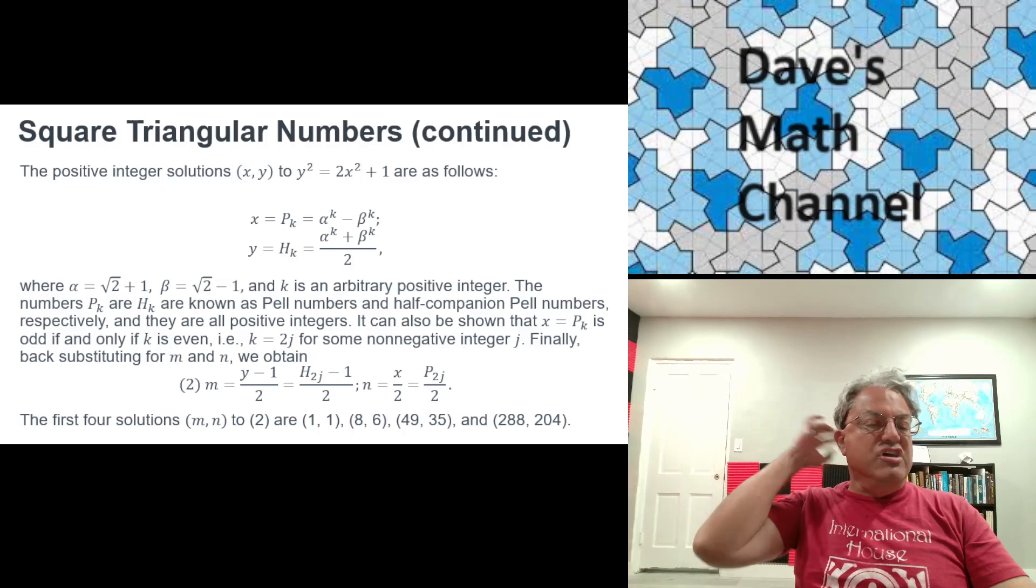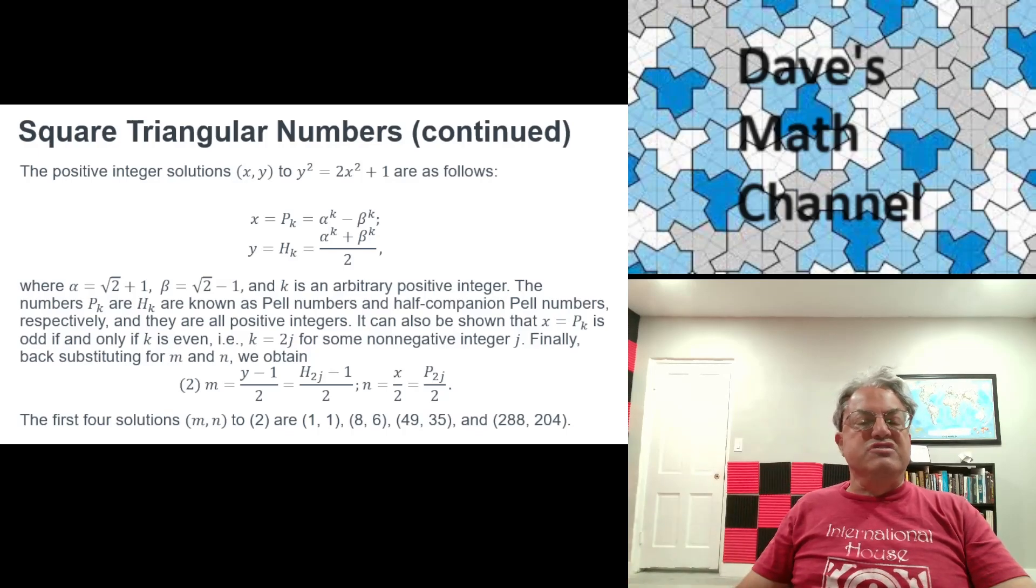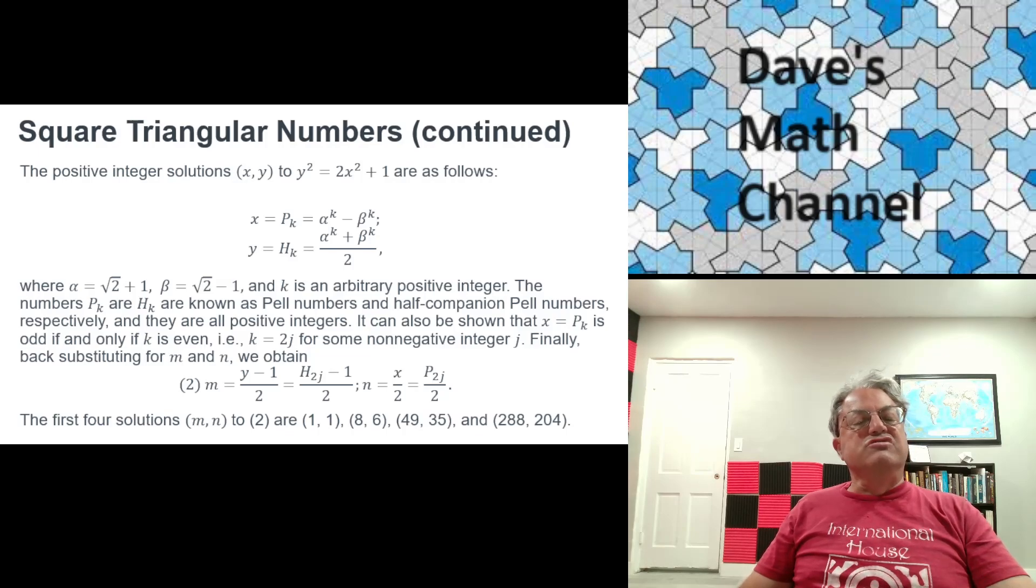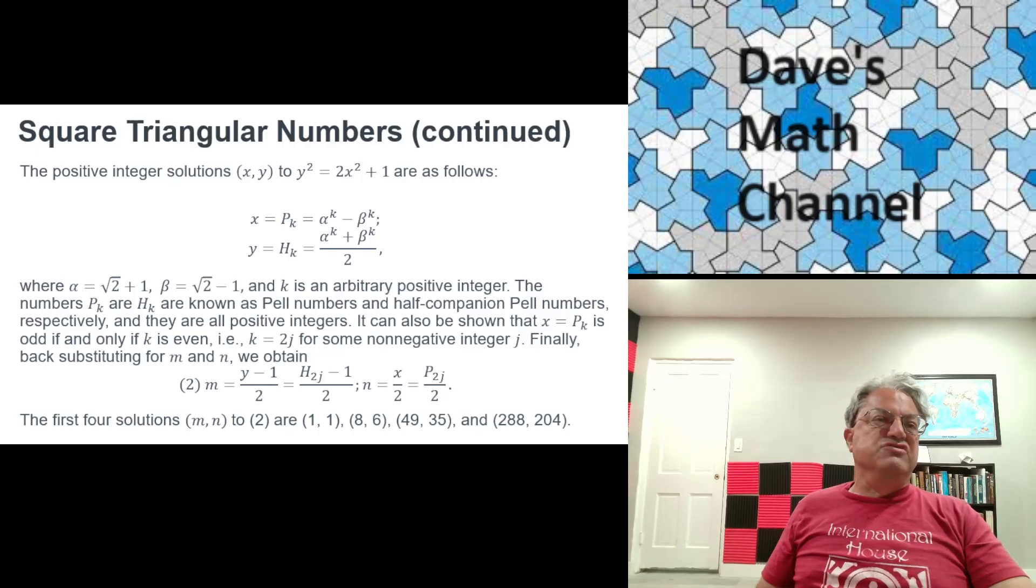And it's well known how to solve for these Pell numbers and half companion Pell numbers. I'm not going to go through that. You can make tables, there's extensive tables of both sequences, and you can just use those sequences to get solutions for m and n. And it turns out the first four of those, 1 comma 1, that's kind of the trivial solution. Obviously, 1 is both a square and a triangle, but we don't really care about that one.